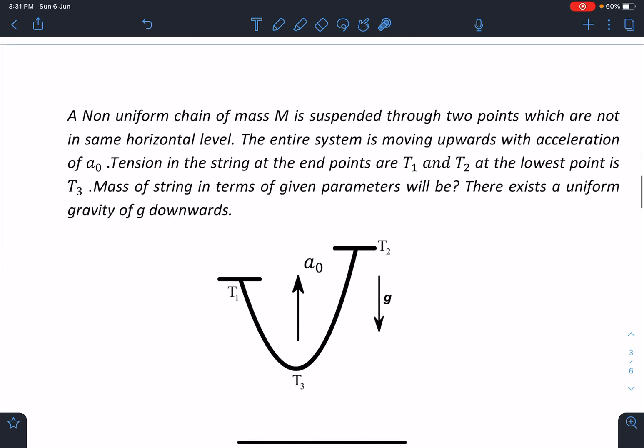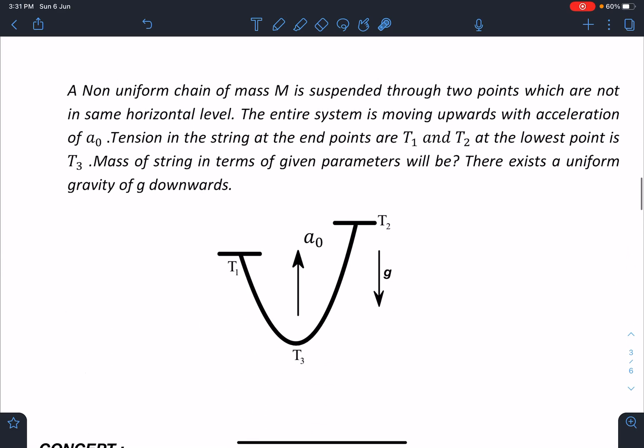Here is the problem statement: A non-uniform chain of mass M is suspended through two points which are not in the same horizontal level. The entire system is moving upwards with acceleration a₀. Tension in the string at the end points are T₁ and T₂, and at the lowest point is T₃. Mass of the string in terms of given parameters will be - that is, in terms of T₁, T₂, T₃, and acceleration a₀. There exists a uniform gravity of g downwards.